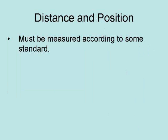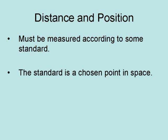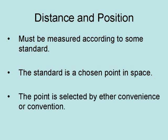Both distance and position must be measured according to some standard. This standard is a chosen point in space. The point is selected by either convenience or convention, but without such a starting point, determining distance and position is impossible.